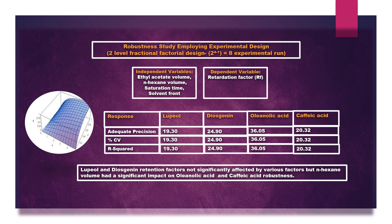A robustness study was performed using a two-level fractional factorial design with eight experimental runs. Independent variables were selected as ethyl acetate and hexane volumes, saturation time, and solvent front. The dependent variable was selected as the retardation factor. Adequate precision values for all compounds exceeded 4%, indicating sufficient signal-to-noise ratio.